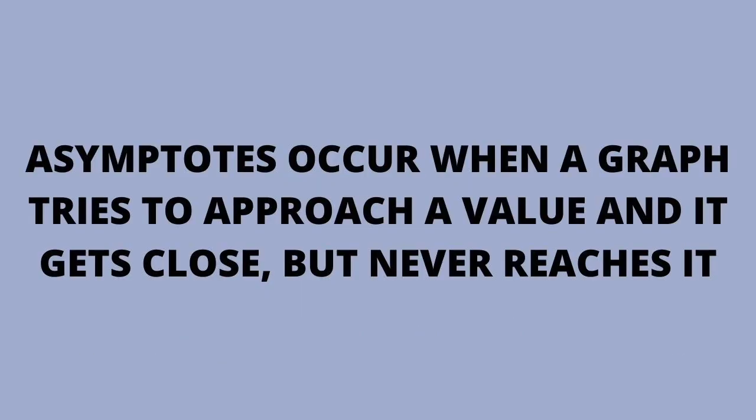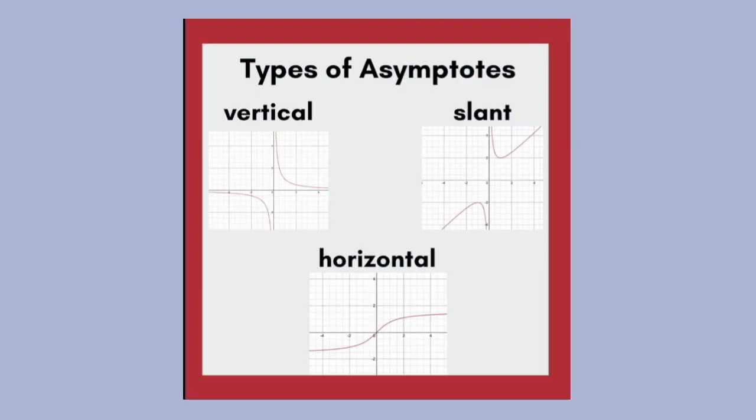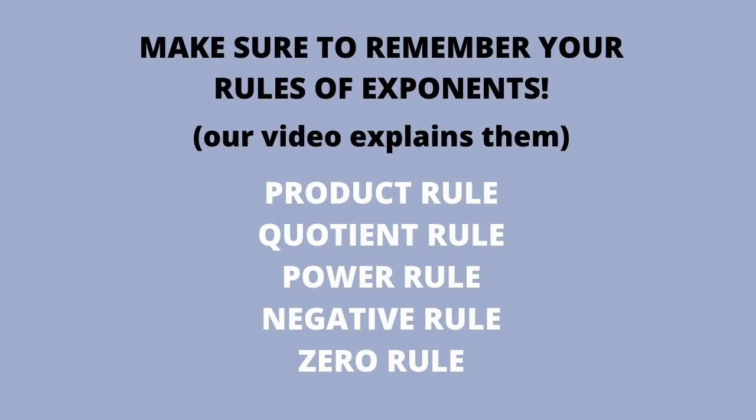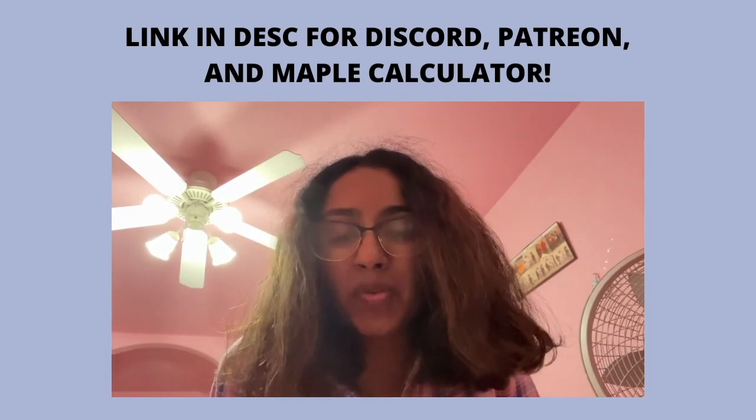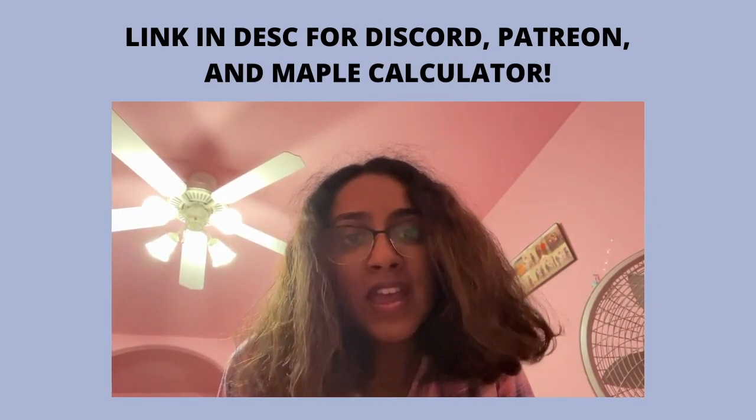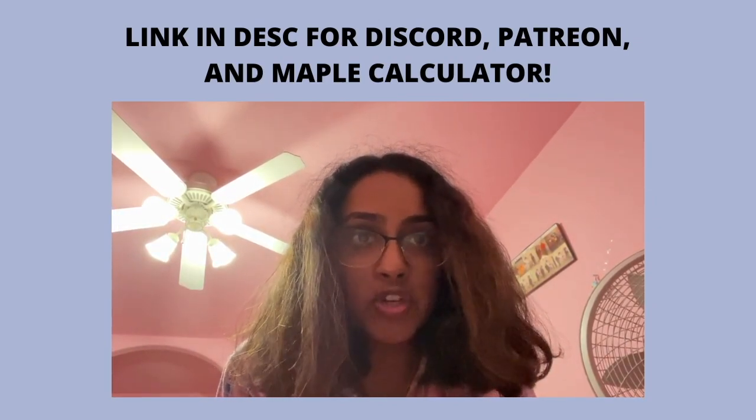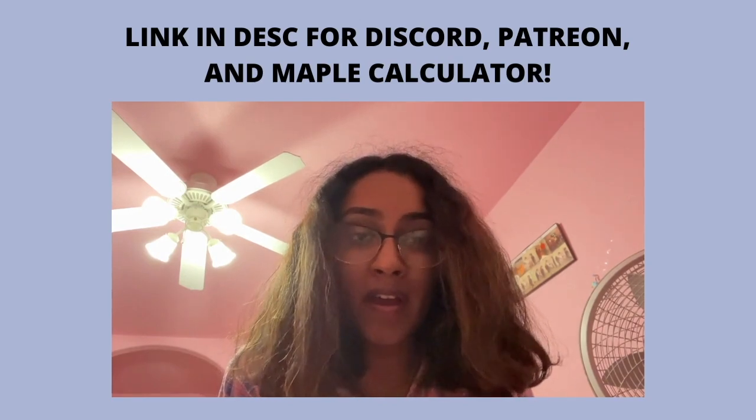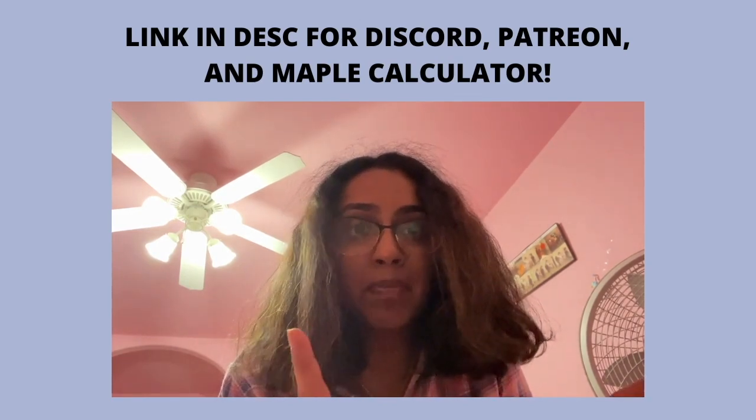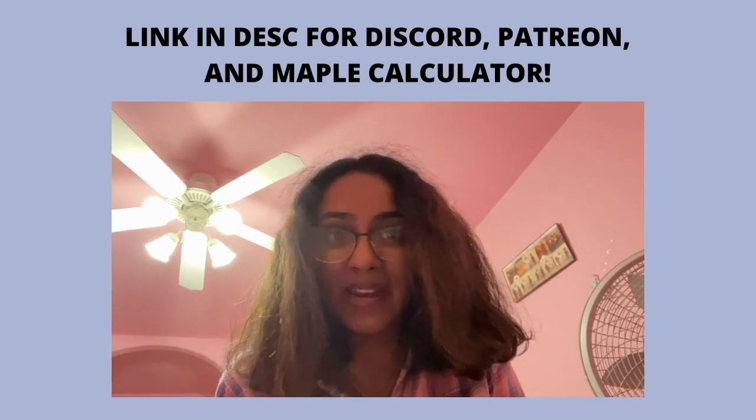This particular example is called a horizontal asymptote. An asymptote occurs when a graph tries to reach a certain value and gets really close but never reaches it. There are horizontal and slant asymptotes. Make sure to remember all the rules of exponents. Thank you for watching! If you like learning math through songs, subscribe and check out our Patreon. Don't forget to download the Maple Calculator—the link is in our description.